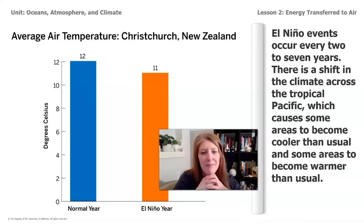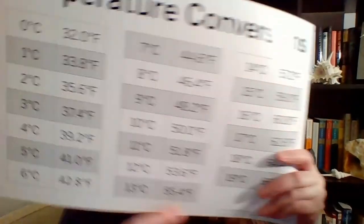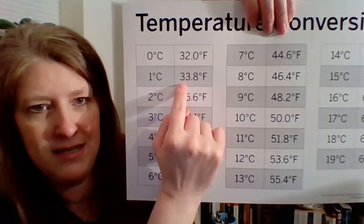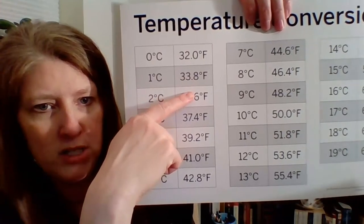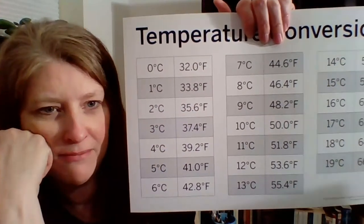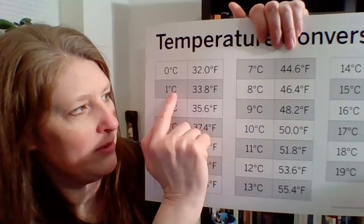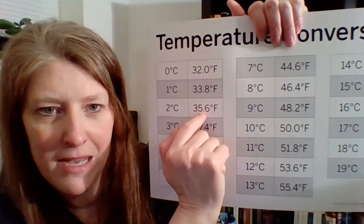So now we're talking about one degree difference. If I look at my chart, I can see that the difference between one degree Celsius and one degree Fahrenheit — looking at the conversion chart — it looks like it's about two degrees Fahrenheit. And that's helpful to sort of understand.